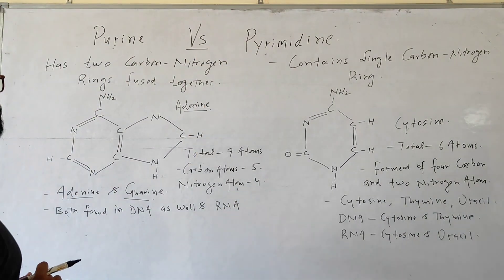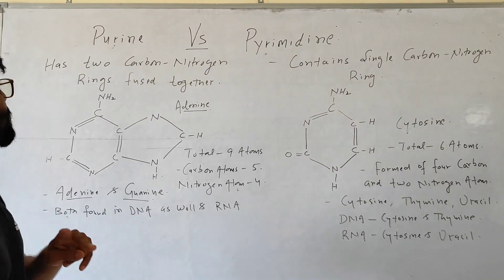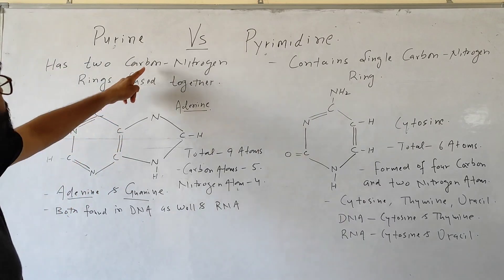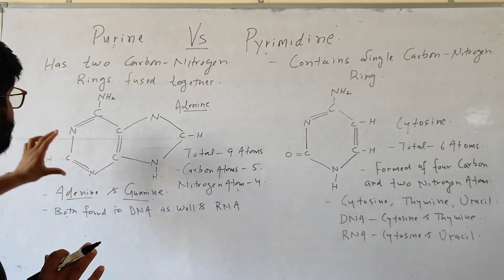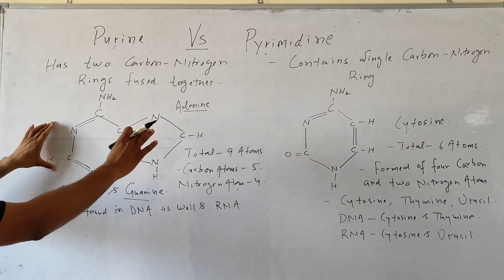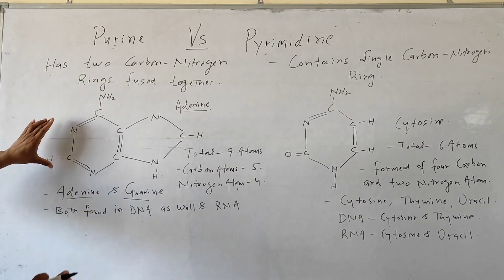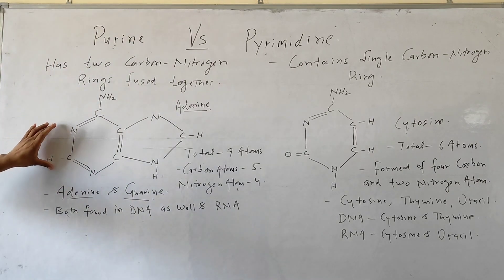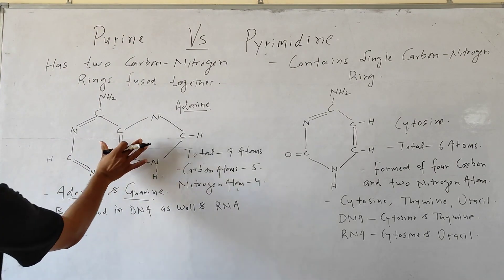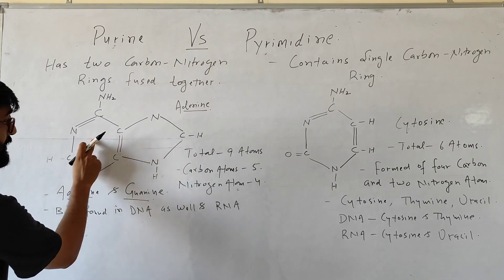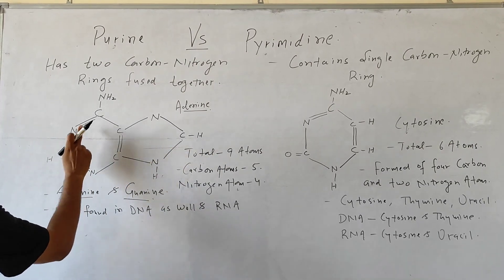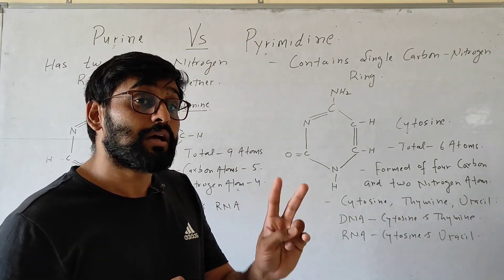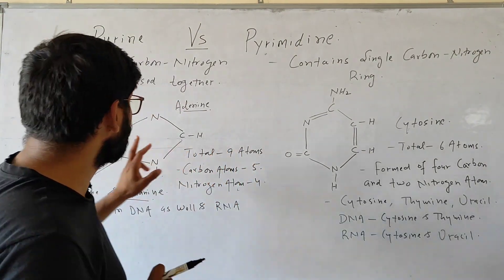So what are Purines? Purines have two carbon-nitrogen rings — these are compounds which have two carbon-nitrogen rings fused together. This is the structure of adenine, which comes under Purines. You can see that there are two rings in this structure: the first ring and the second ring. Both rings contain nitrogen and carbon — two carbon-nitrogen rings fused together.